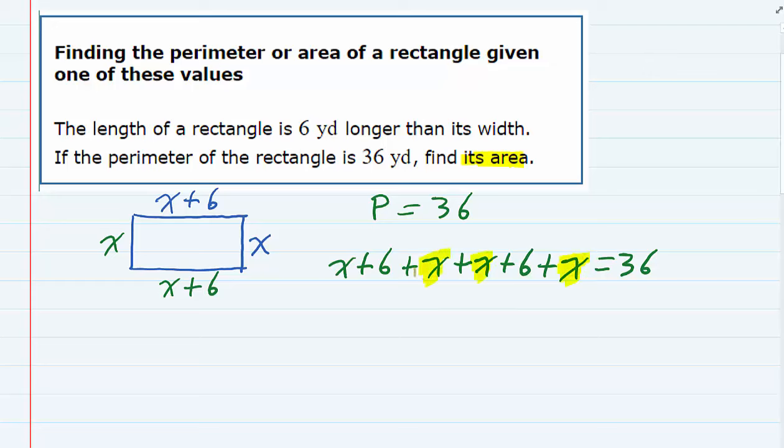All of these x's are like terms, and each one of them is a one x. So I have one x, plus another one, plus another one, plus another, for a total of four x's. So those terms add up to be 4x.